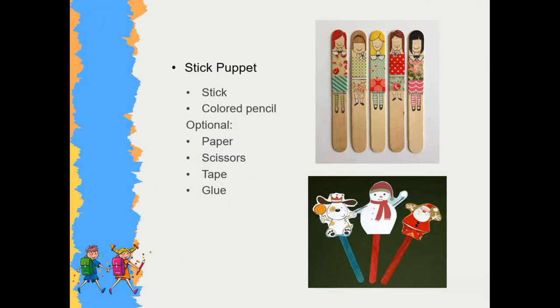For stick puppets, we need stick, pen, and colored pencils. We simply draw face and clothes on the stick. Optionally, we can use paper for face or clothes as well. We cut the paper in the shape of face and clothes. By using glue or tape, we can stick them together. Then our stick puppet is ready to use.